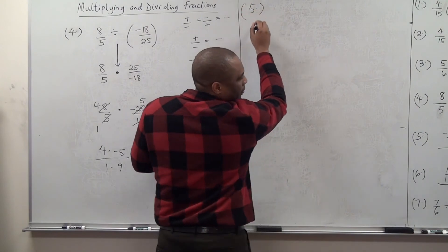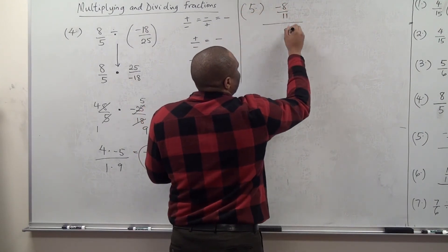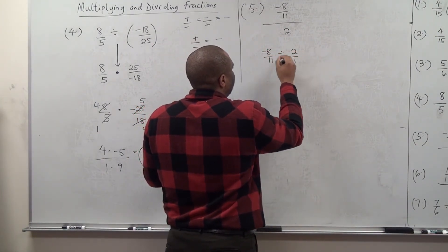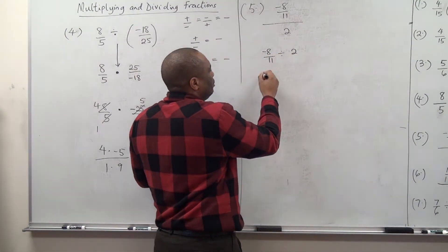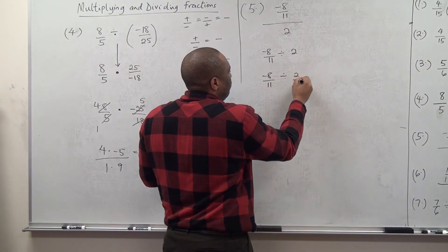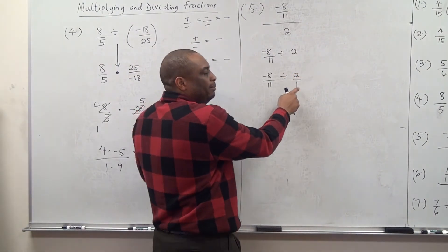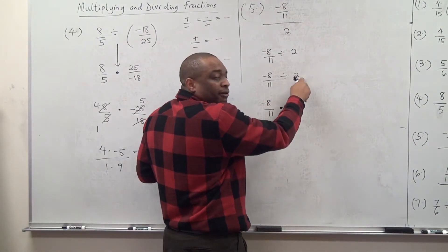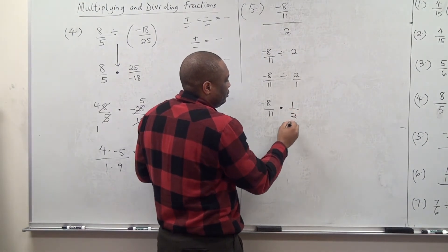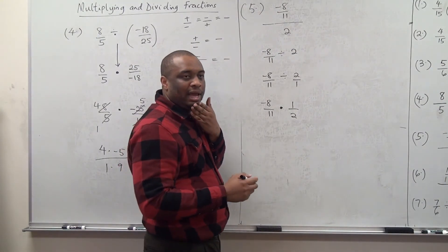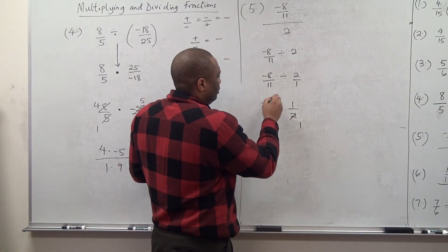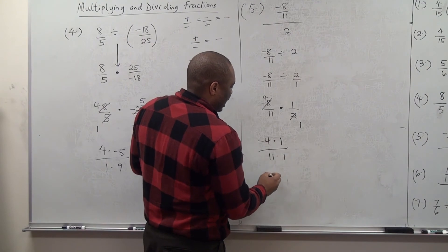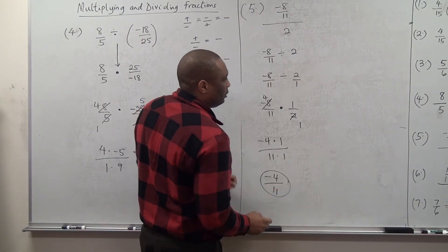Number 5: negative 8 over 11 divided by 2. Division by 2 means negative 8 over 11 divided by 2 over 1. Convert division to multiplication and find the reciprocal of the second fraction: 1 over 2. Simplify and multiply: 2 divides 2 is 1, 2 divides 8 is 4. So this is negative 4 times 1 over 11 times 1, which gives negative 4 over 11.